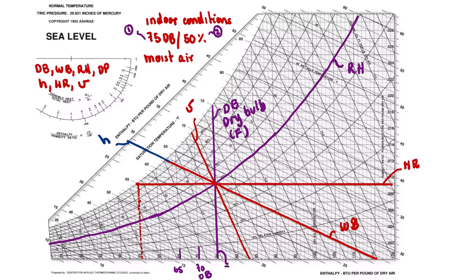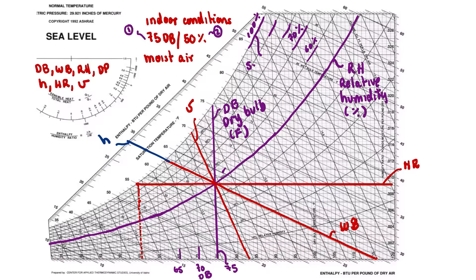The next input is relative humidity, abbreviated RH. Relative humidity has no units — it's expressed as a percentage. On the chart, 50% relative humidity is shown here, with curves at 60, 70, 80, 90, and up to 100%. When you reach 100%, that's called the saturation line, which represents 100% relative humidity.